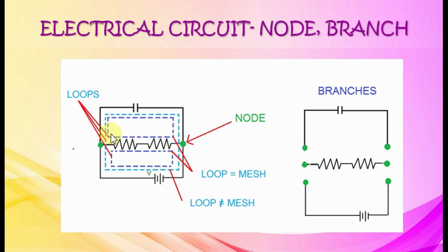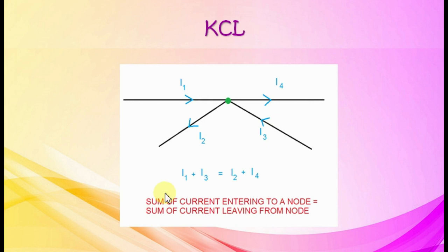Kirchhoff's current law: the sum of currents leaving a junction equals the sum of currents entering a junction. In other words, the algebraic sum of all the currents entering and leaving a junction must be equal to zero.